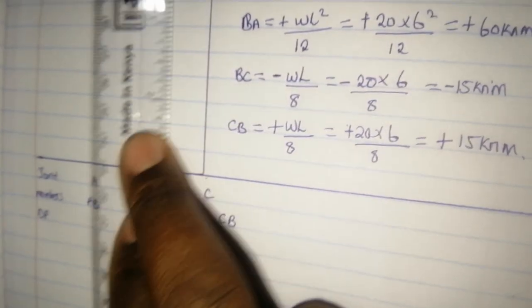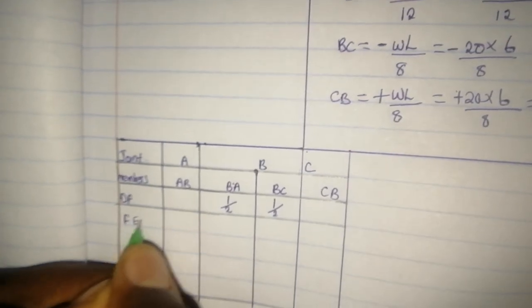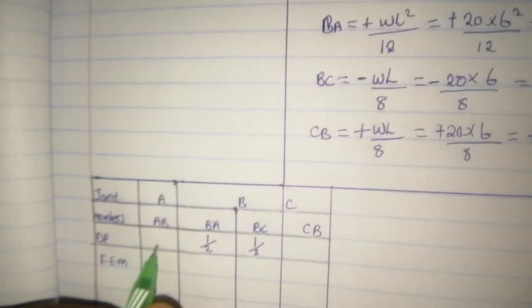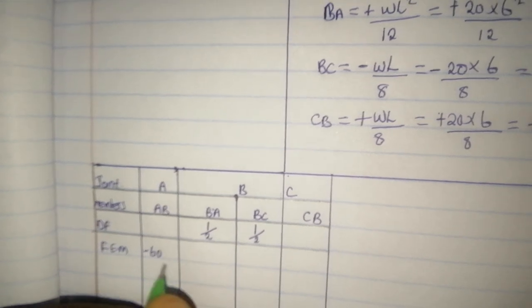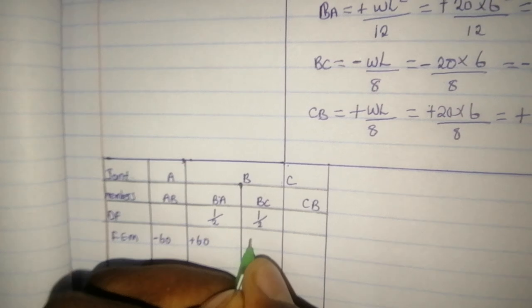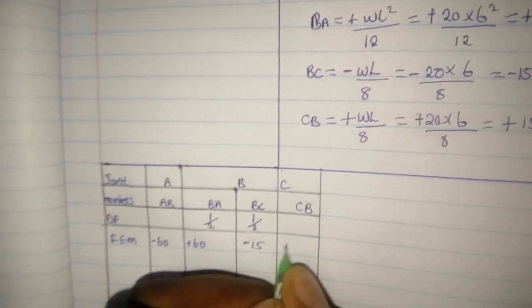In the fixed end moment row: AB has negative 60, BA has positive 60, BC had negative 15, and CB has positive 15. Note: the table shows these as negative 50 and positive 50 but the calculated values are negative 15 and positive 15.